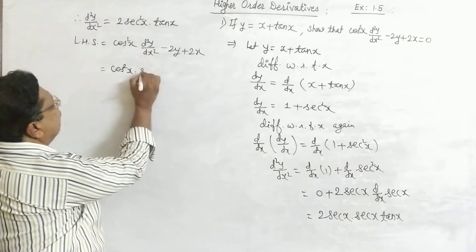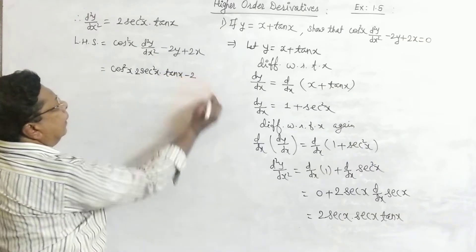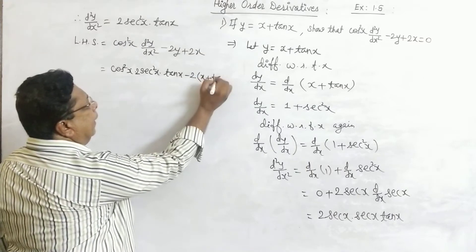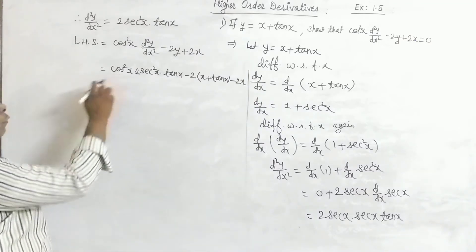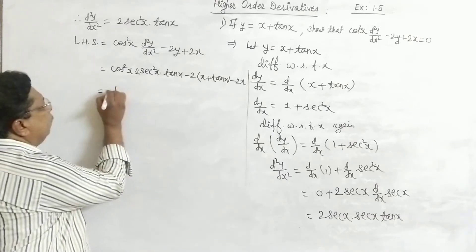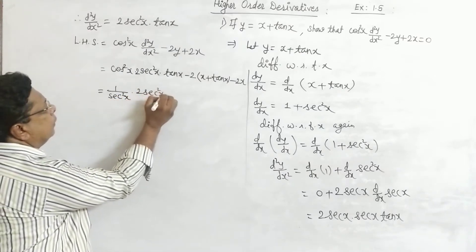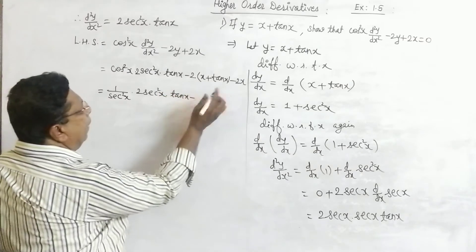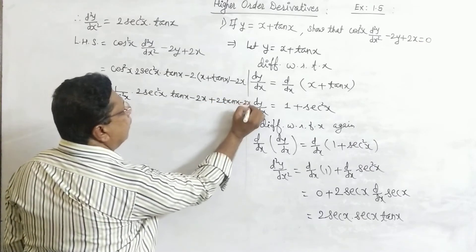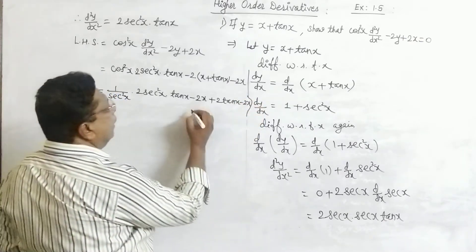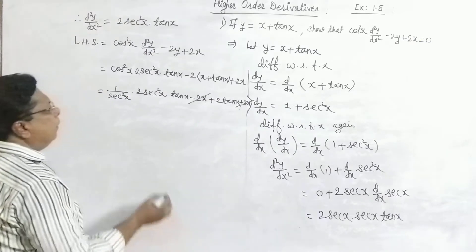d²y/dx² is 2·sec²x·tan(x), and y equals x plus tan(x). So LHS becomes: cos²x · 2·sec²x·tan(x) minus 2(x + tan(x)) minus 2x. Since cos²x = 1/sec²x, cos²x into sec²x cancels. This gives 2·tan(x) minus 2x minus 2·tan(x) minus 2x plus 2x. The 2x terms cancel and the 2·tan(x) terms cancel.